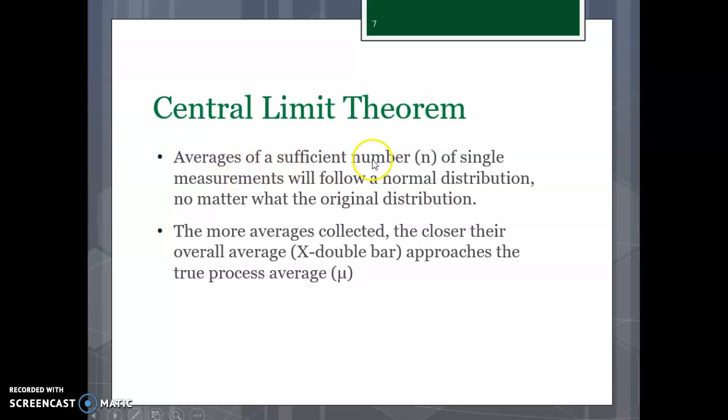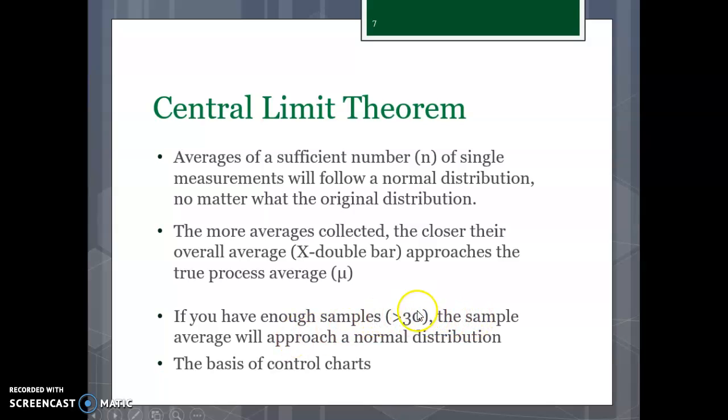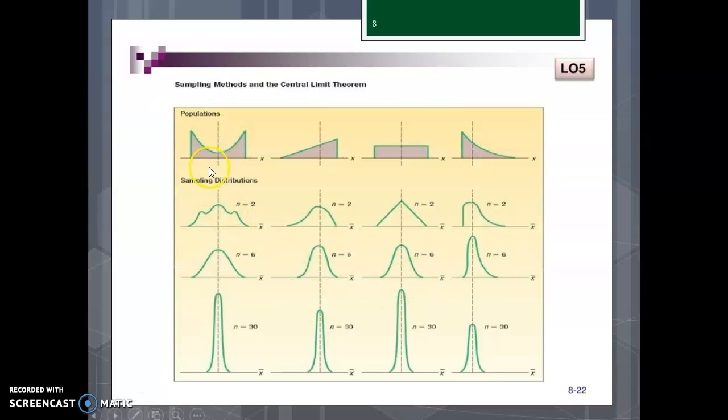Now we have what's called a central limit theorem. These are the averages of a sufficient number of the single measurements. This number N is your measurements will follow a normal distribution. Remember that bell-shaped curve, right? Your histogram showed you that a lot. So the more averages you're collected, the closer to your overall average, which is your average, it's called the X double bar, and it approaches your true average. So if you have enough samples, and again, the number greater than 30 gives you a better indication. Over 30 samples or more are a good amount because that just shows you that you are collecting some good data. And the sample average will approach a normal distribution. So this is the basis behind the control charts.